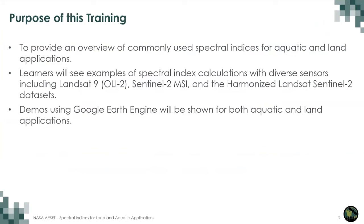Here's a little bit about the purpose of this training. It's concentrated on providing an overview of some of the commonly used Spectral Indices for both aquatic and land applications. Participants will see examples of Spectral Index calculations with diverse sensors, including Landsat 9 and Sentinel-2, and also with the harmonized Landsat Sentinel datasets. We will also show short demos on using Google Earth Engine for both aquatic and land applications.